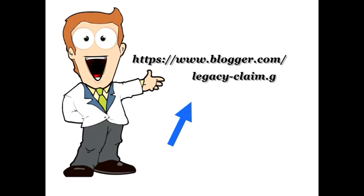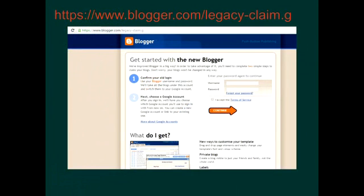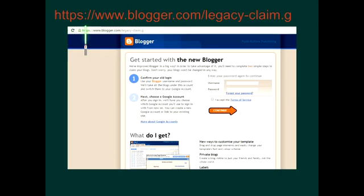Let's go to this page and look at the steps you have to go through. Just open up a browser like Google Chrome and go to www.blogger.com/legacy-claim. I've written the URL down here so you can write it down while watching this video. Once you go to this website, this is exactly what you will see: 'Getting Started with the New Blogger' — confirm your old login. This is how Blogger used to look like back in the days before Google.